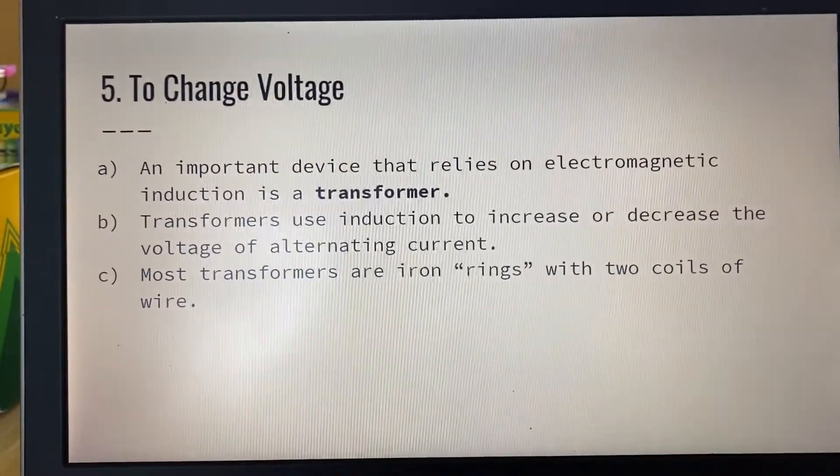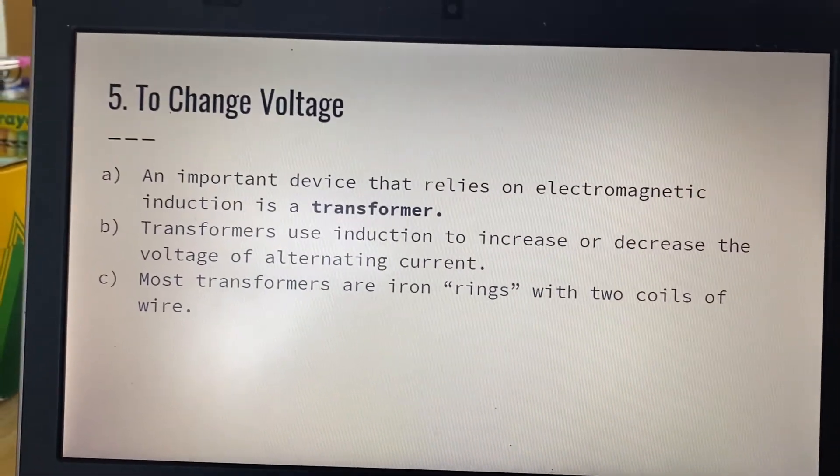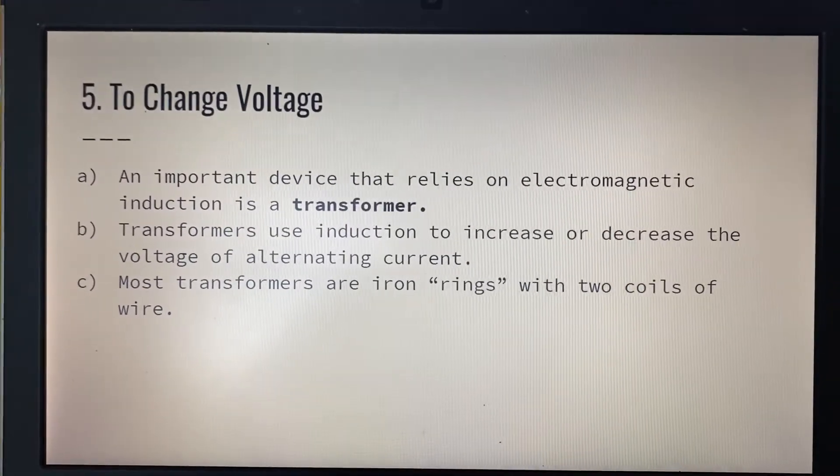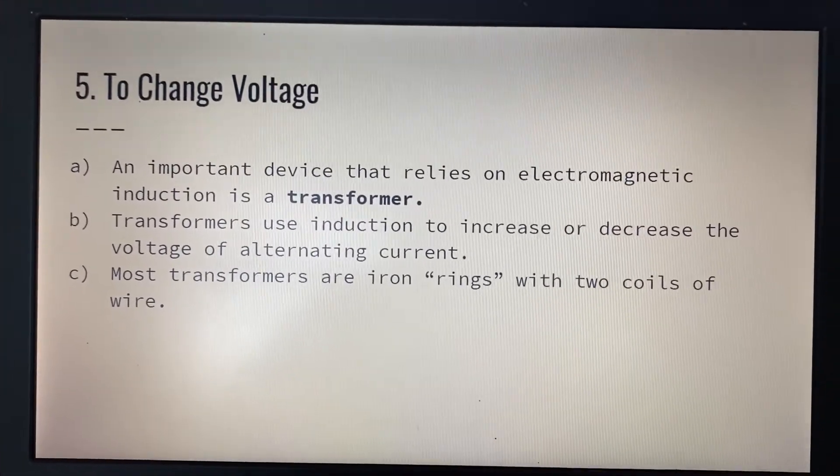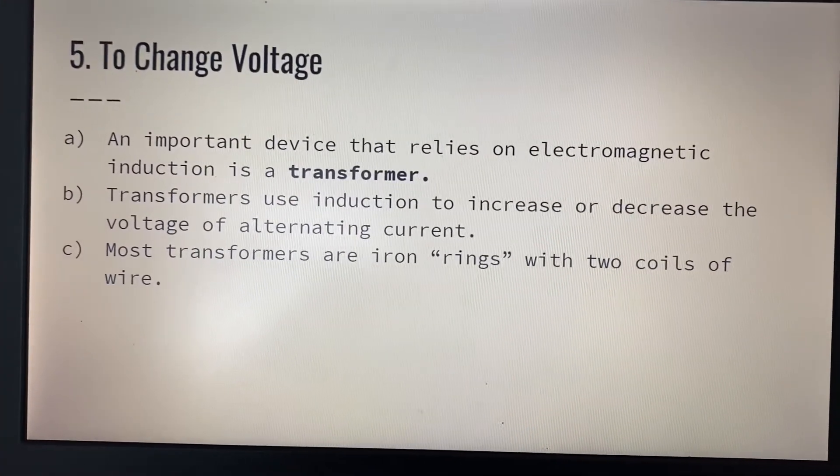To change the voltage, an important device that relies on electromagnetic induction is called a transformer. You see them on top of power lines. In fact, sometimes when they die, they explode in a large pop, and you're like, what's that? And all of a sudden your electric goes out. So that's a transformer.